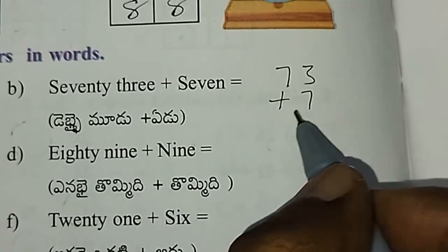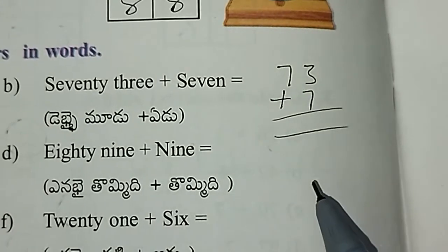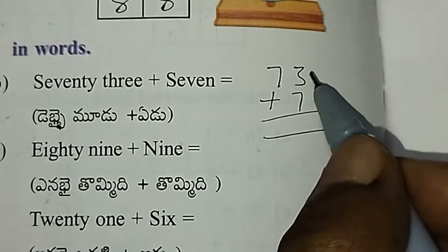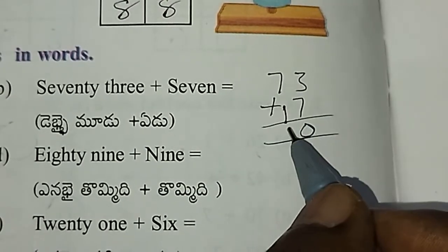Next, 73 plus 7. For 7 plus 3, that's 10. Then 7 plus 1 is 8, giving us 80.